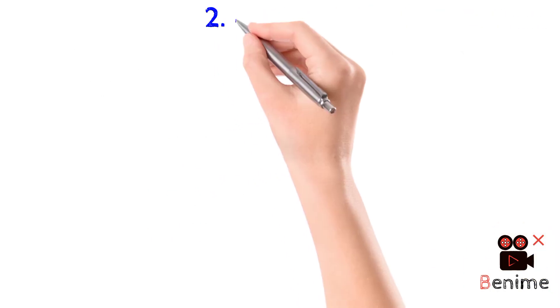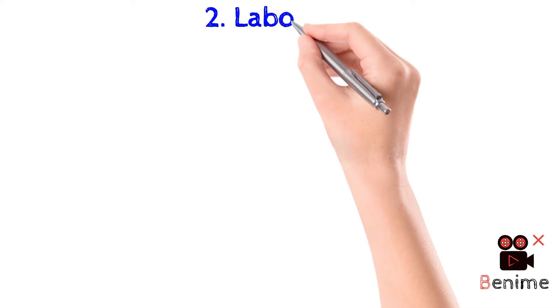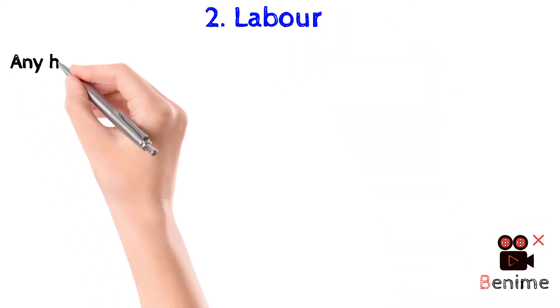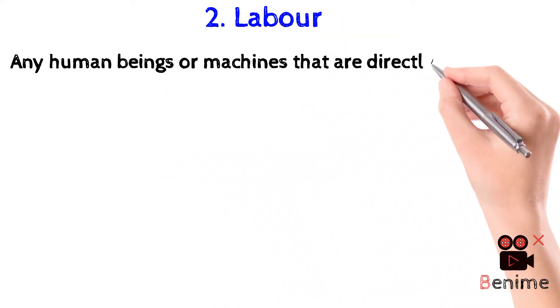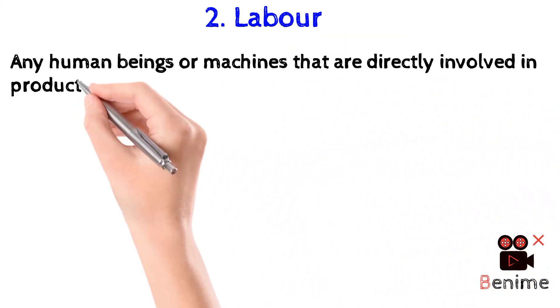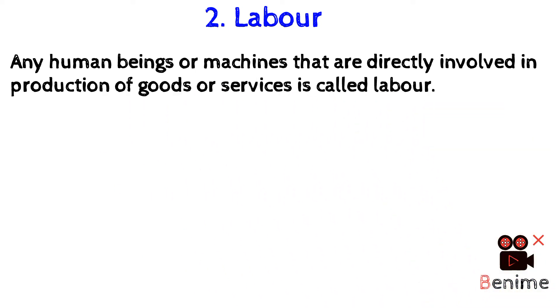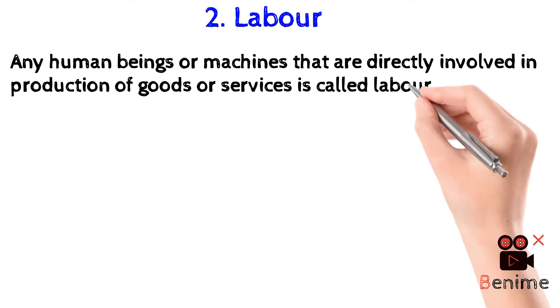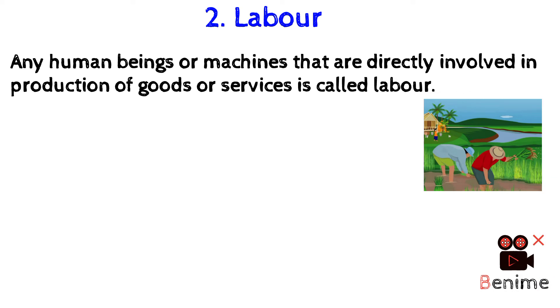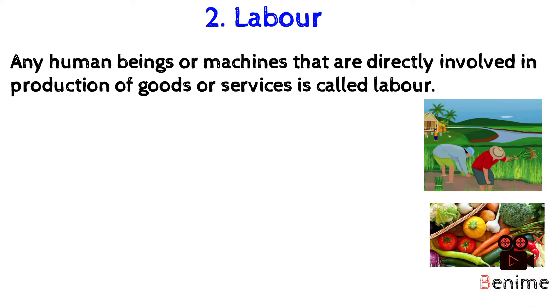Now let us discuss our second factor of production, that is labor. In simple words, any human beings or machines that are directly involved in the production of goods or services is called labor. It means labor is nothing but the hard work we do to run the business. For example, if a farmer is producing vegetables, the hard work that the farmer does in producing the vegetables is called labor.